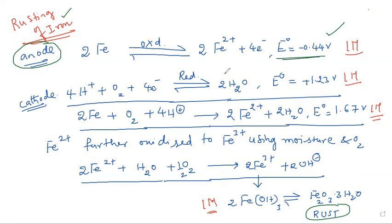Whereas the cathode reaction is a reduction reaction taking place using moisture containing H⁺ ions and oxygen from the air, which gives water in the equation. E° for this process is plus 1.23 volts.